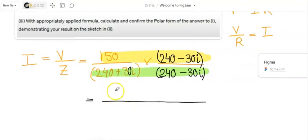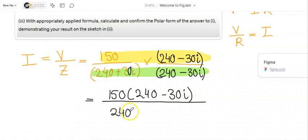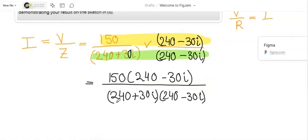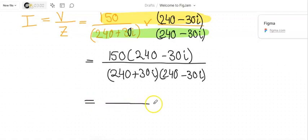Multiplying the top first, you write it down: 150 bracket 240 minus 30i, and the bottom one is 240 plus 30i and 240 minus 30i. Multiply them together. The top is 150 times 240 and 150 times minus 30, that is 36000 minus 4500i.